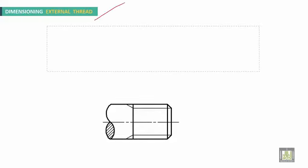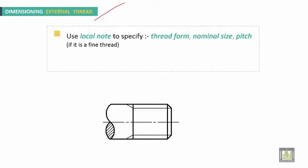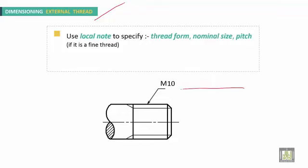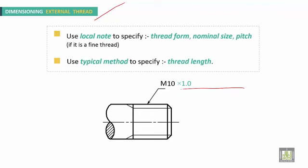For dimensioning of external thread, use a local note to specify the thread form, nominal size, and pitch — pitch is specified only if it is a fine thread. For example, M10 for a coarse thread; if it is fine, you add the pitch multiplied by 1. Use the typical method to specify the thread length.